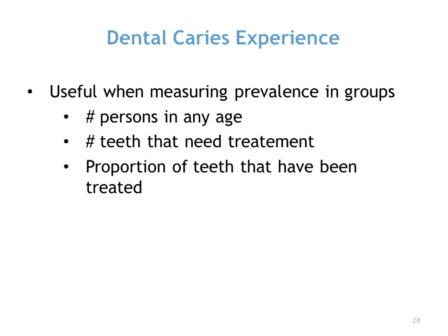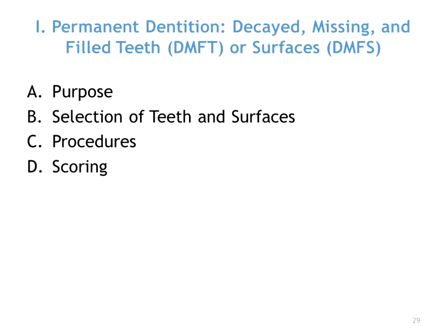For dental caries, the dental caries experience data is most useful when measuring the prevalence of dental disease in groups rather than individuals. The population score can document information such as the number of persons in any age group affected by dental caries, the number of teeth needing treatment, or the proportion of teeth that have been treated. For the permanent dentition, DMFT or DMFS — Decayed, Missing, and Filled Teeth or Surfaces — are used in uppercase letters and determine the total dental caries experience, past and present. The DMFT is based on 28 teeth, while the DMFS is based on surfaces, giving 128 surfaces for 28 teeth.